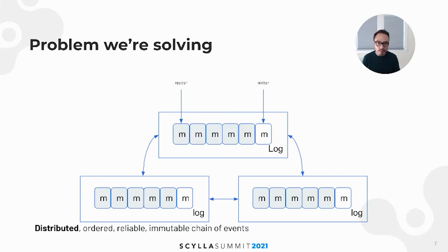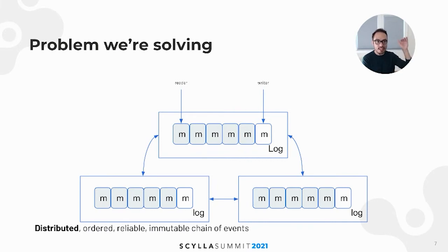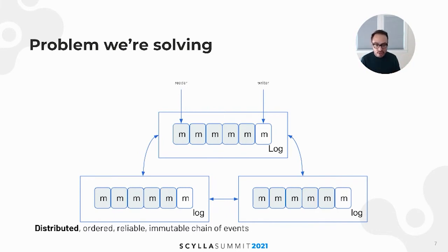Let's describe the problem and how C-Star helps us achieve a solution that yields that 44X performance improvement you saw on the first slide. At its core, the message queue is really a replicated, distributed, ordered, reliable, immutable chain of events.